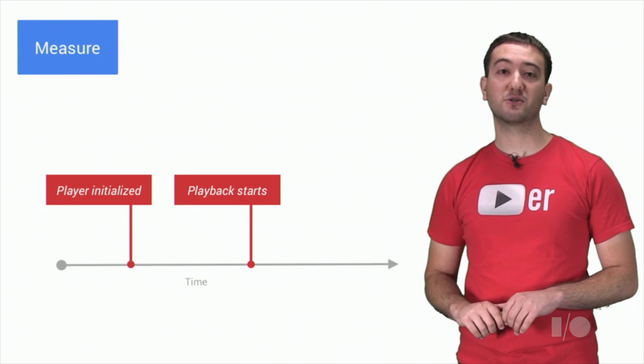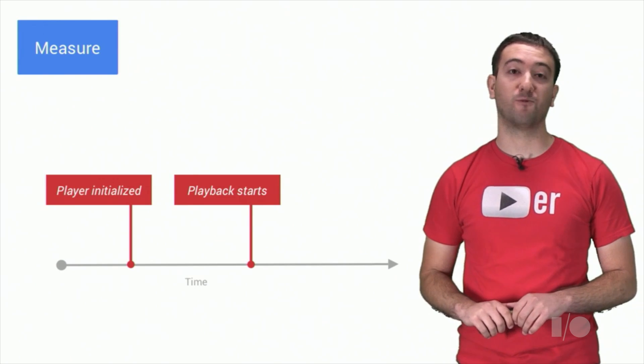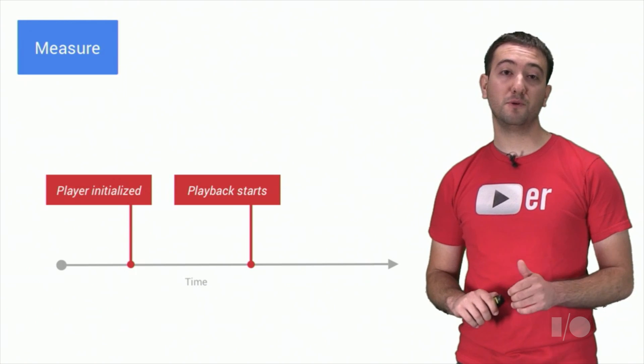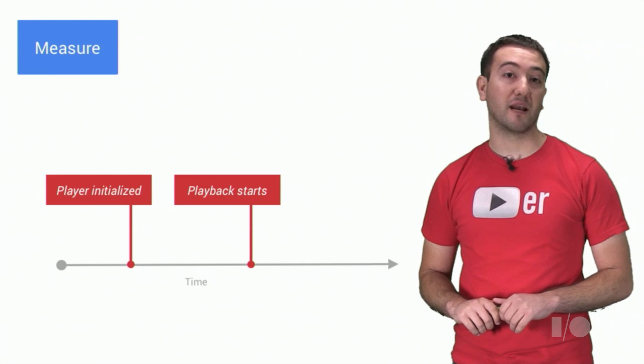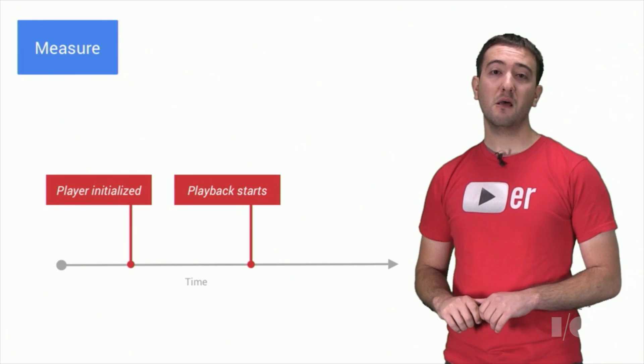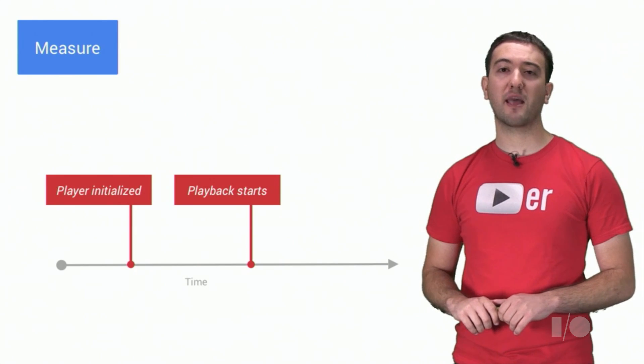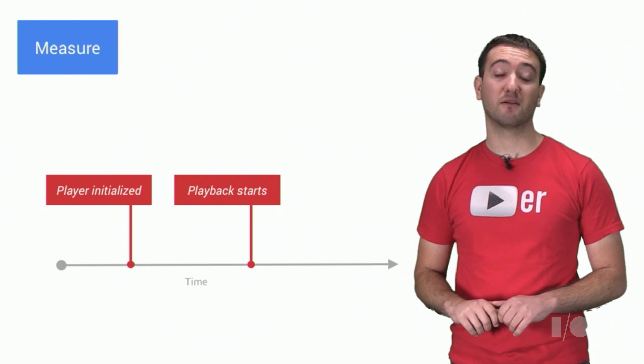It's also important to include any contextual information that might have an effect on performance. For example, YouTube users may be exposed to experimental features, and we would need to know what effect that might have had on performance. By keeping track of these variables, we're better able to get insights into the performance of particular demographics.